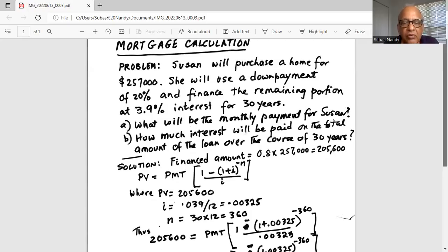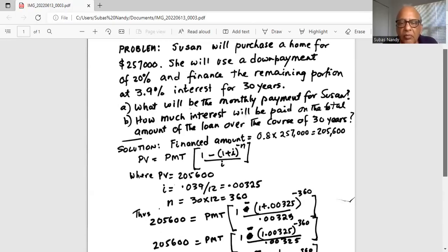In this case, present value is $205,600, the amount she borrowed. Interest rate is 0.039 compounded monthly, so divided by 12 is 0.00325. And the number of time periods is 30 years multiplied by 12 months, which is 360.